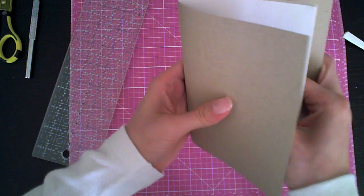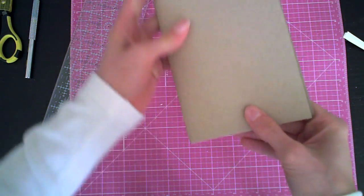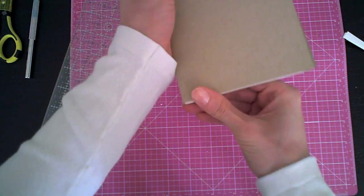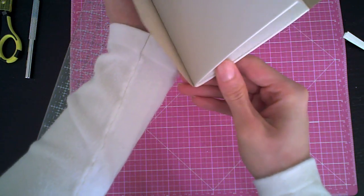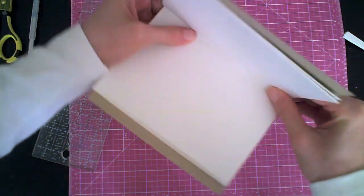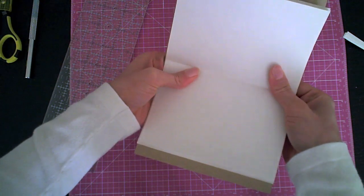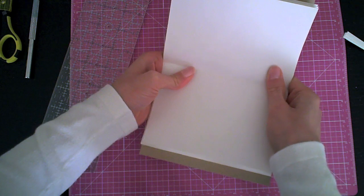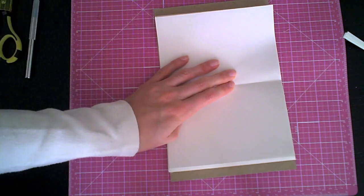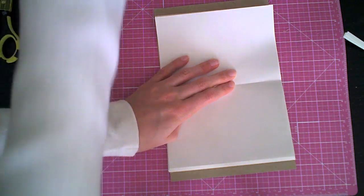Now I take a cardstock which is 8.5 inch wide and 5.5 inch long and kind of wrap it around the white paper stack to make sure that it fits and that the spine is rounded at the same width as the spine of the paper stack.